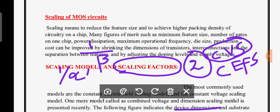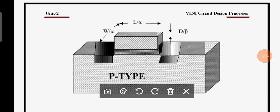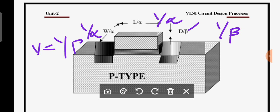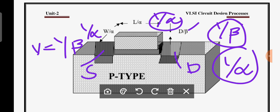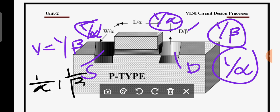Before discussing scaling factors for device parameters, observe the figure clearly. You can see the length of the device, the width of the device, the length and width of the channel, and the thickness of the oxide. The scaling factor of length is 1/α, the scaling factor of width is 1/α, and the scaling factor of oxide thickness is 1/β. The scaling factor for voltage is 1/β, and for source or drain it is 1/α. Overall, there are only two scaling factors: 1/α and 1/β.